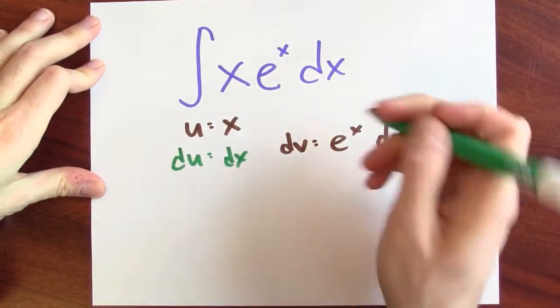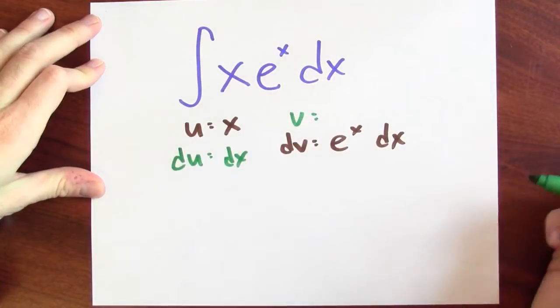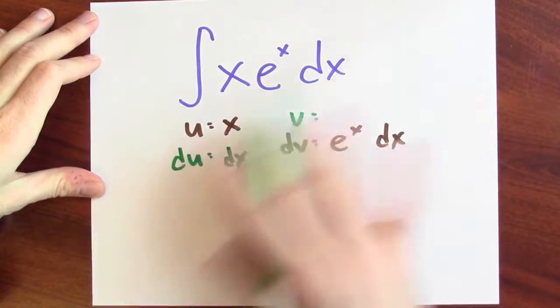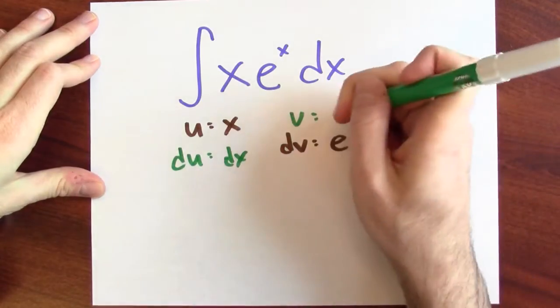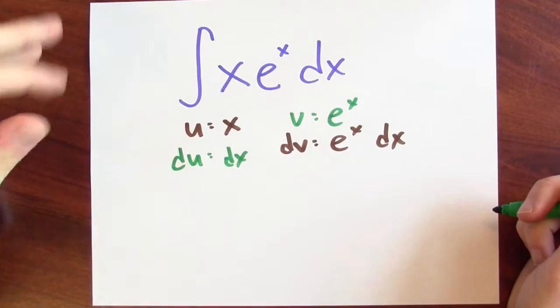And then I've got to pick an anti-derivative for dv. Now, in principle, there's a ton of anti-derivatives I could pick, right? e to the x plus 17 differentiates to e to the x. But I'll just pick the nice one. I'll pick e to the x.